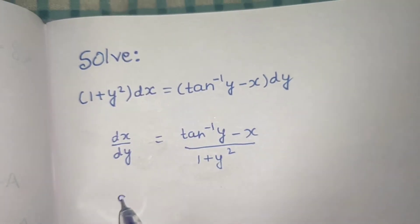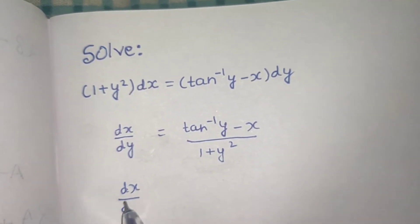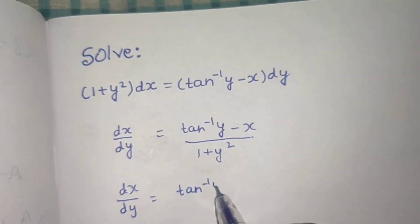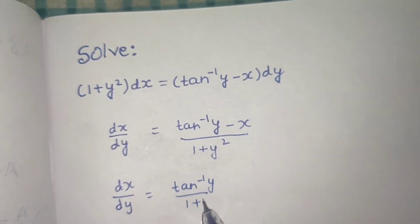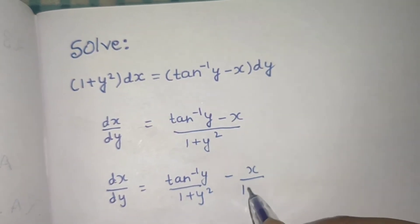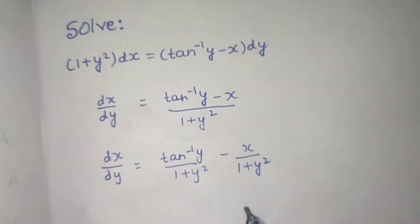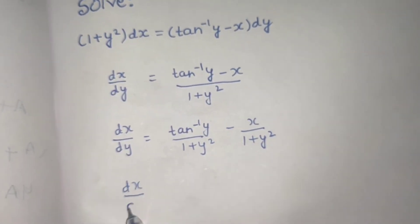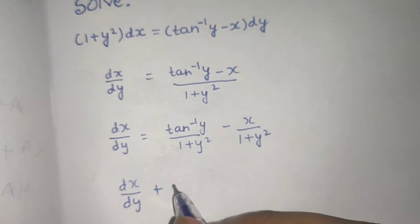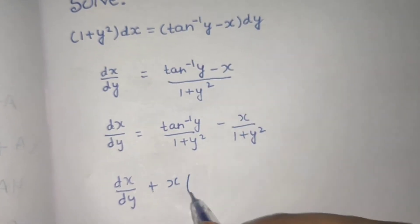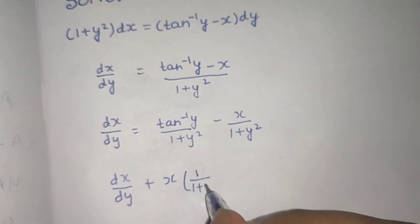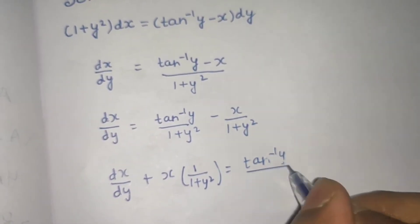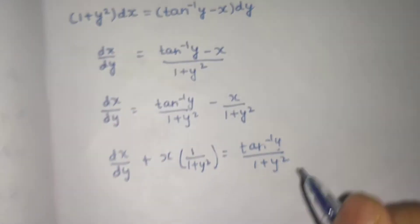Now I will separate the terms: dx/dy equals tan⁻¹y divided by 1 plus y², minus x divided by 1 plus y². Sending the x-term to the LHS, I get dx/dy plus x times 1/(1 + y²) equals tan⁻¹y divided by 1 plus y².